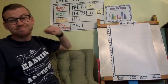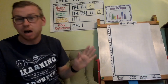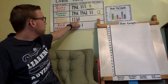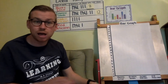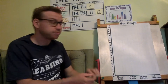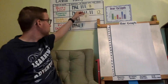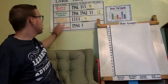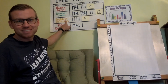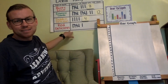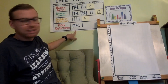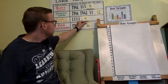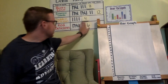Golden Delicious — not so popular. One, two, three, four people liked Golden Delicious. And last but not least, Red Delicious had five, six people that liked Red Delicious.